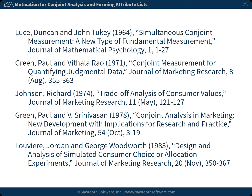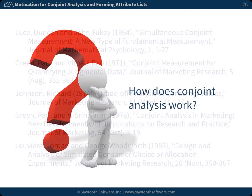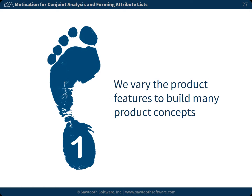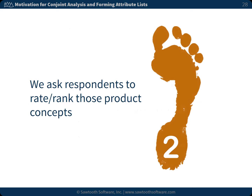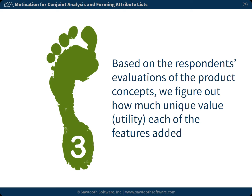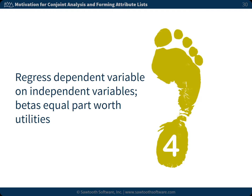Here are some of the important peer-reviewed articles that establish the foundations of conjoint analysis. So, how does conjoint analysis work? There are actually only four steps. First, we vary the product features, which we call independent variables, to build many — usually 12 or more — product concepts. Next, we ask respondents to rate or rank these product concepts, which we call the dependent variable. Step three, based on the respondents' evaluations of the product concepts, we figure out how much unique value or utility each of the features added. And step four, we regress the dependent variable on the independent variables, so the betas equal part-worth utilities.